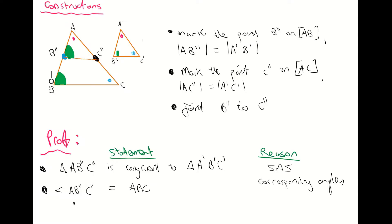From that, because those two angles are equal in size, we can now conclude that the length B''C'' is parallel to BC. The congruent triangle fits into that larger triangle, so we are saying that they are parallel to each other. We know that the length BC is parallel to B''C''.